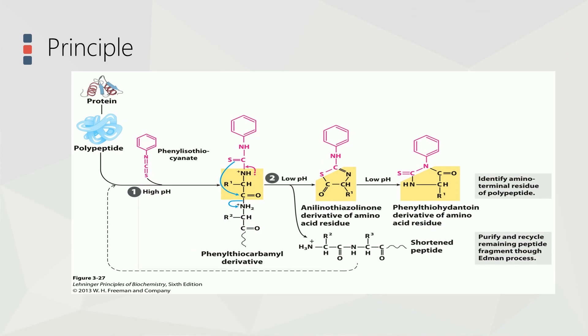Cyclic degradation of peptides is based on the reaction of phenylisothiocyanate with the free amino group of the N-terminal residue, such that amino acids are removed one at a time and identified as their phenylthiohydantoin derivatives by chromatography.